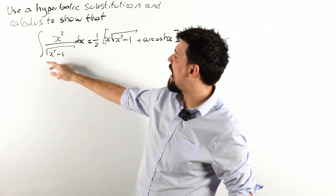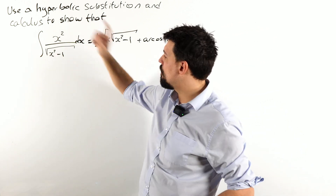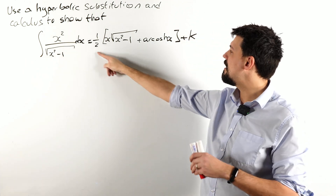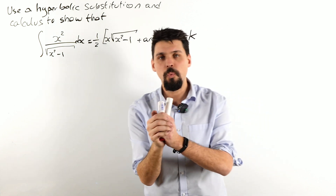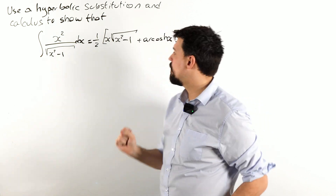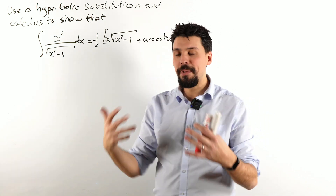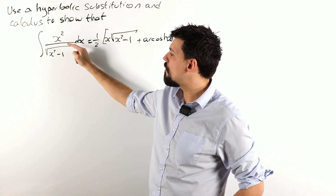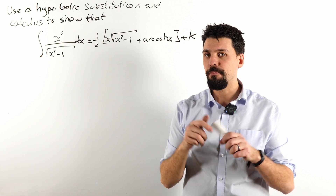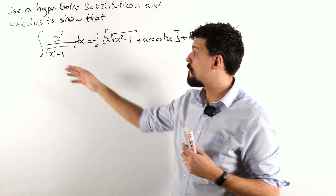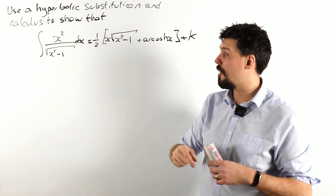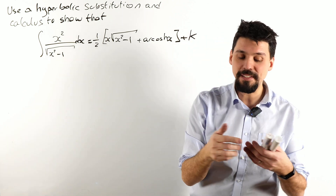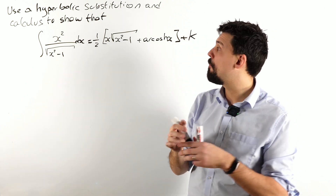We want to show that the integral of x squared over square root of (x squared minus one) is all of this. Where does our brain go? We've been doing this for a while. I can see a square root of (x squared minus one). Now normally, if it was one minus x squared, I'd go trig substitution, but it's the wrong way around. That normally tells me hyperbolic.